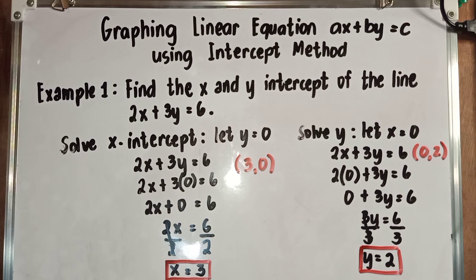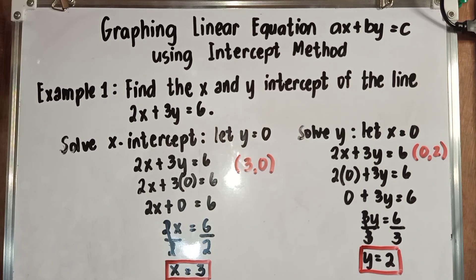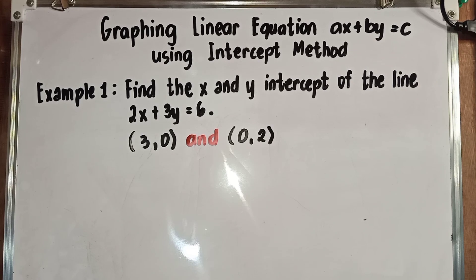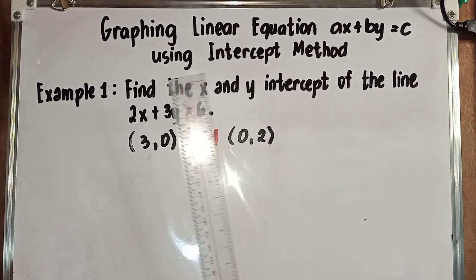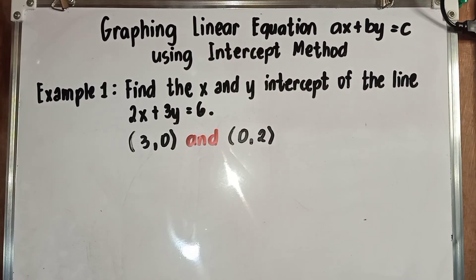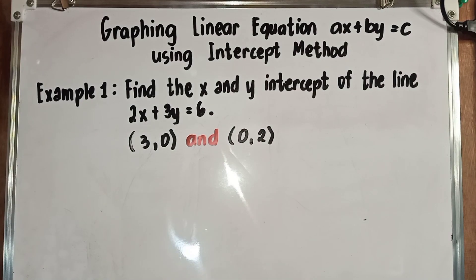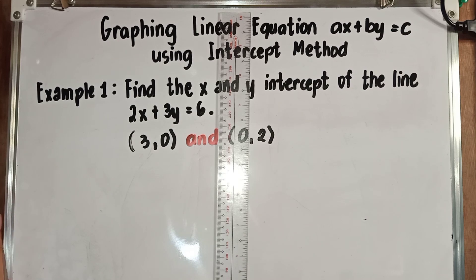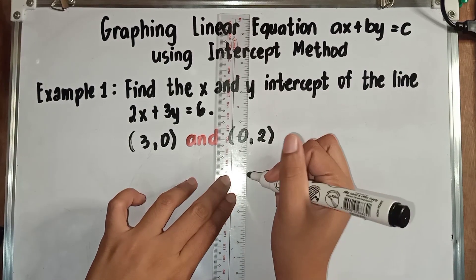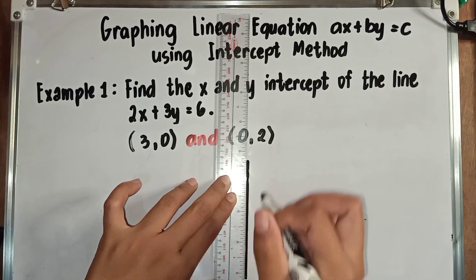What we are going to do next is to graph the given linear equation using the two ordered pairs. We have the two ordered pairs: (3, 0) and (0, 2). What we are going to do is create a Cartesian plane. We will base where to stop the numbering on the largest number in the given ordered pairs. Since the largest number is 3, we will stop at 3. Using a ruler, we will create a Cartesian plane — first the y-axis, then the x-axis.